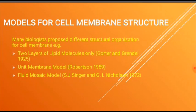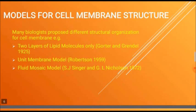Different models have been given by different biologists for cell membrane structure. Many biologists proposed different structural organizations for cell membrane. For example: two layers of lipid molecules only, proposed by Gorter and Grendel in 1925; unit membrane model proposed by Robertson in 1959; and fluid mosaic model proposed by S.J. Singer and G.L. Nicholson in 1972.